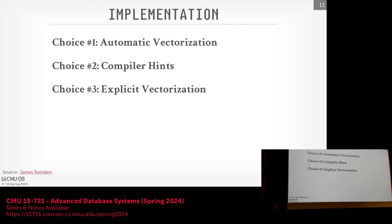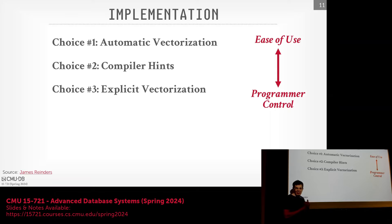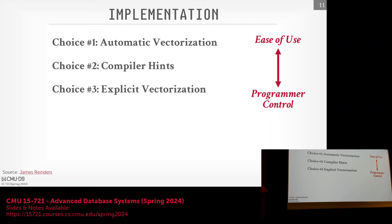There are three basic approaches to vectorization: automatic (let the compiler figure out what to vectorize), compiler hints (give the compiler nudges about what's safe to vectorize), or explicit vectorization (write the actual SIMD instructions yourself via intrinsics). The first is easiest, the last gives the most control.